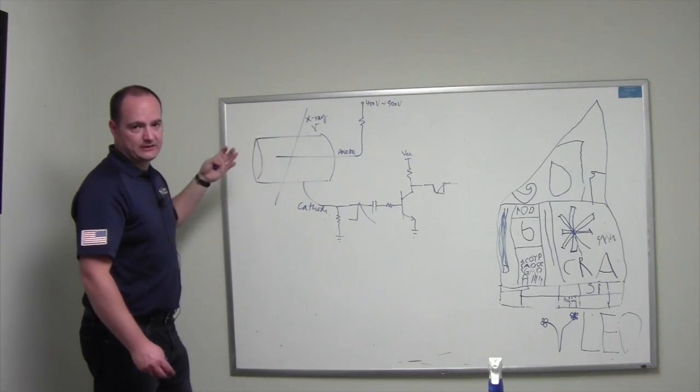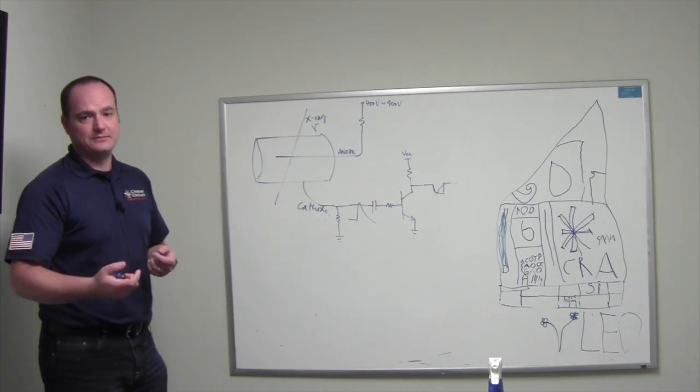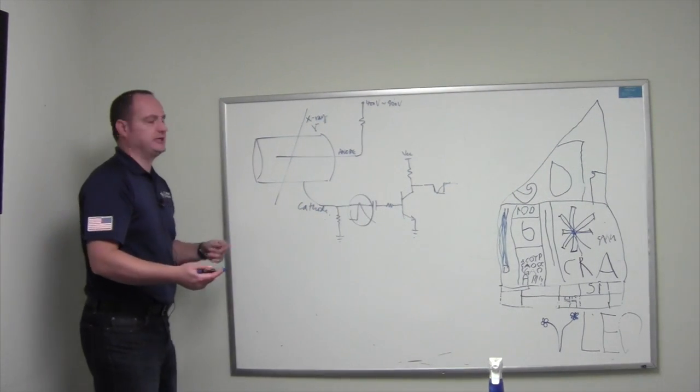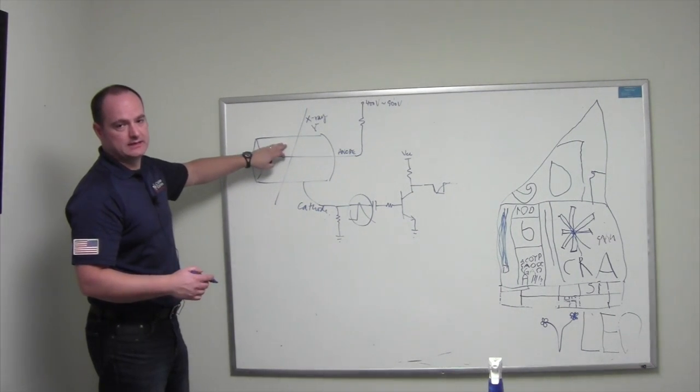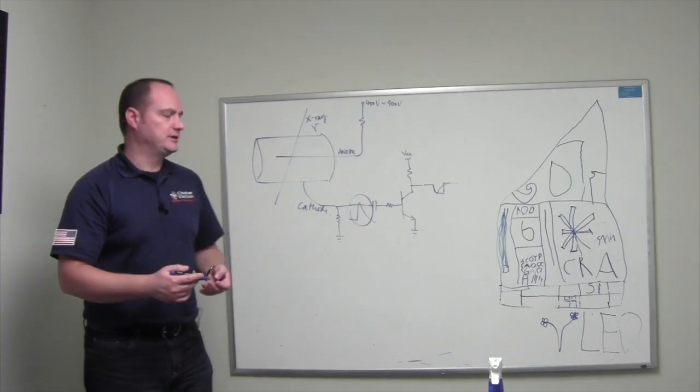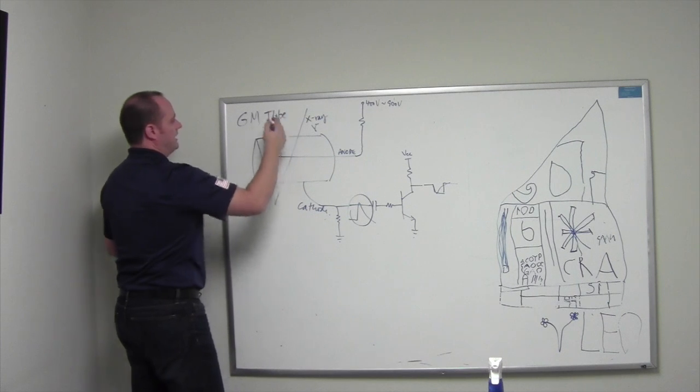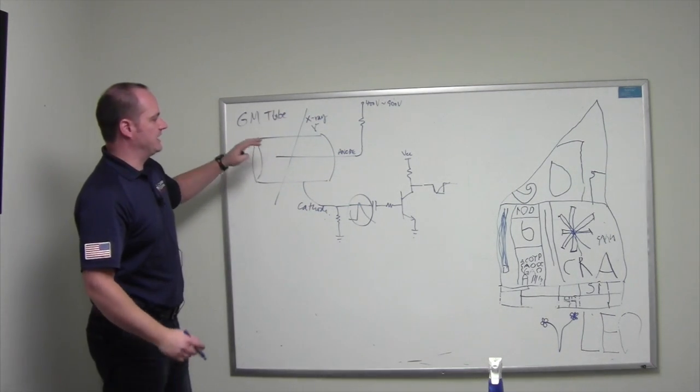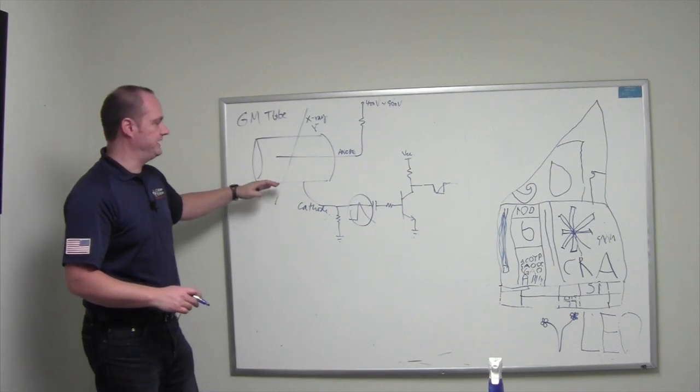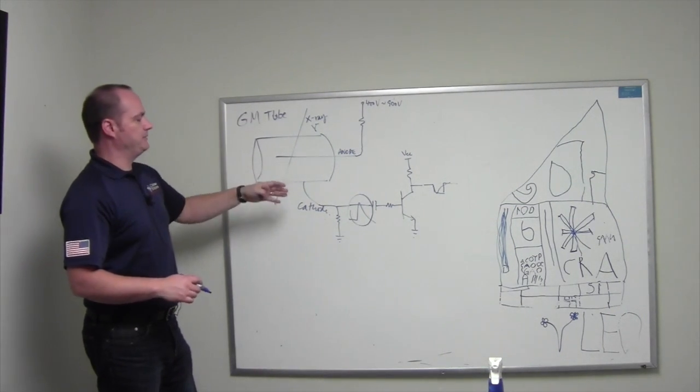There are other types of detectors like scintillator detectors, semiconductor detectors like cadmium zinc telluride or cadmium telluride detectors that produce a signal that is proportional to the energy of the particle, of the gamma ray or x-ray hitting the detector. And those then allow you to create a spectrum out of that detector. But again, the GM Geiger-Mueller tube would not allow you to create a spectrum.